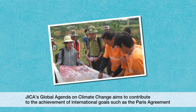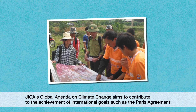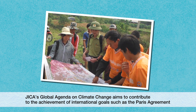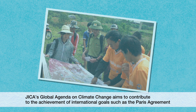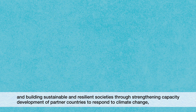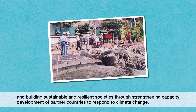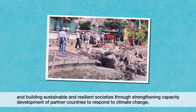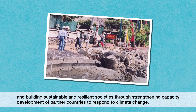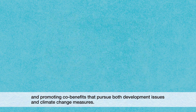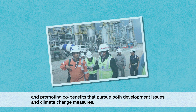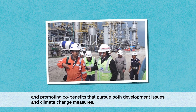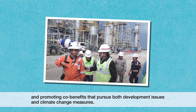JICA's Global Agenda on Climate Change aims to contribute to the achievement of international goals such as the Paris Agreement, and building sustainable and resilient societies through strengthening capacity development of partner countries to respond to climate change, and promoting co-benefits that pursue both development issues and climate change measures.